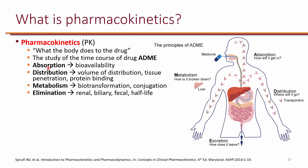It's important to consider absorption so we know the bioavailability of drugs. When it comes to distribution, it's important to know protein binding — some patients may have low albumin, which is the number one protein that binds antibiotics. When it comes to metabolism, it's important to know if a drug is metabolized via the CYP enzyme, which could include drug interactions.